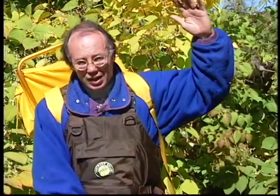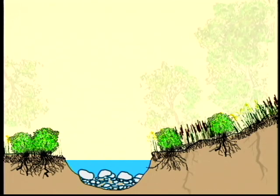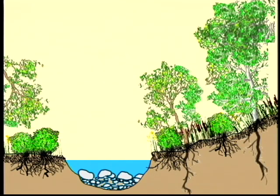Trees have the greatest root zone depth by far, but their root zone density isn't as high as that of shrubs or grasses. But all three are extremely important in stabilizing the banks in the floodplain area.